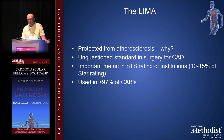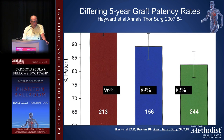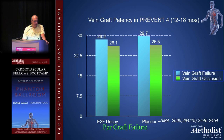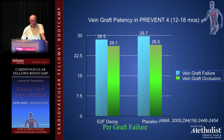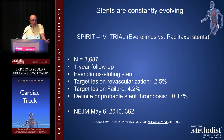Why the LIMA is protected from atherosclerosis we don't know, but it is the unquestioned standard for surgery in coronary artery disease and a metric by which the Society of Thoracic Surgeons rates institutions. Arterial grafts in general have higher patency rates — patency of the LIMA, radial artery grafts, and vein grafts at five years. The PREVENT study, which looked at angiographic patency at one year, found that vein grafts have an astonishingly high failure rate of about 25–27%. They fail but patients don't necessarily return with symptoms — they are asymptomatic failures.